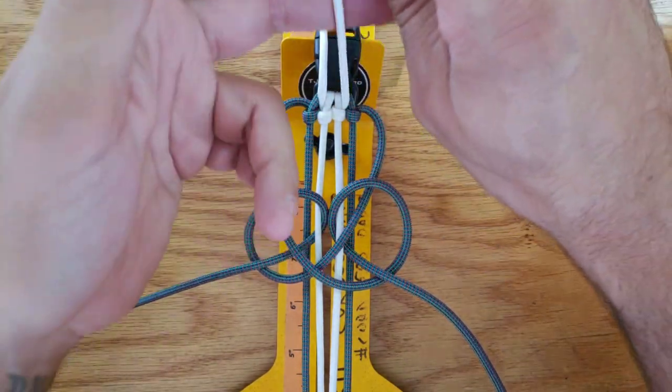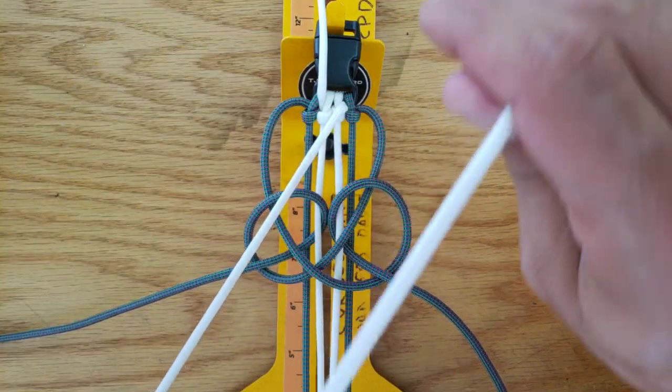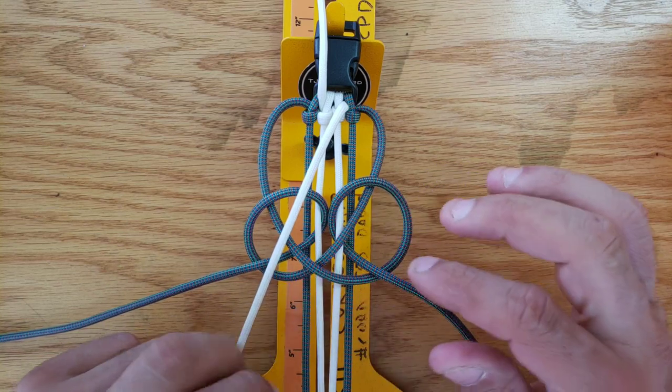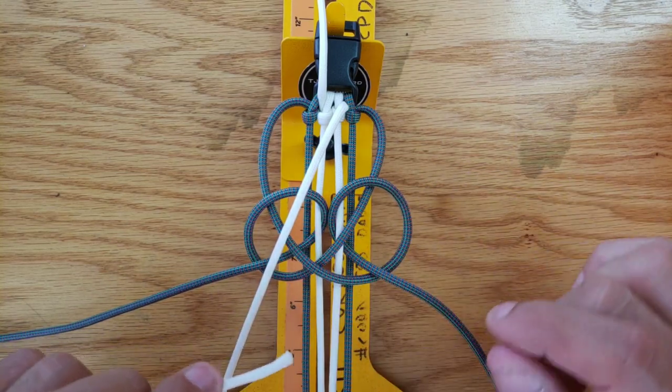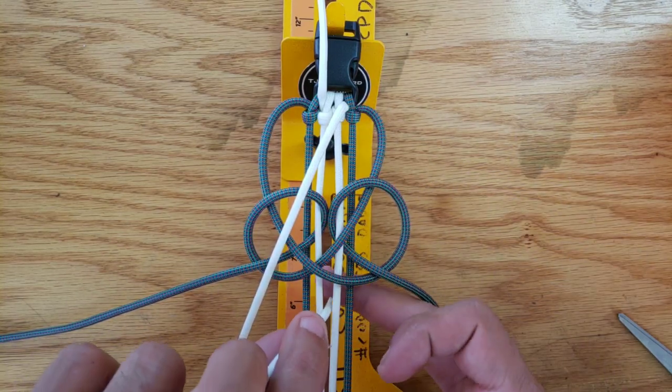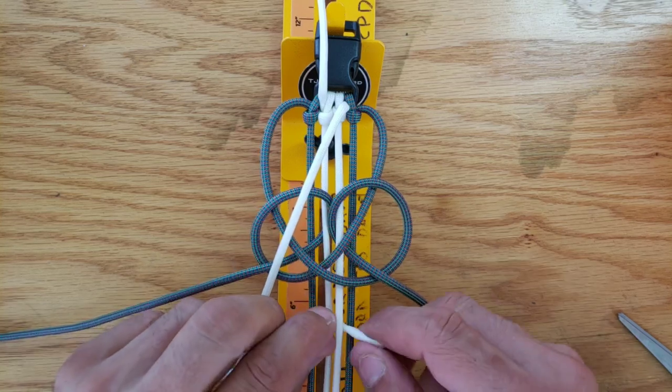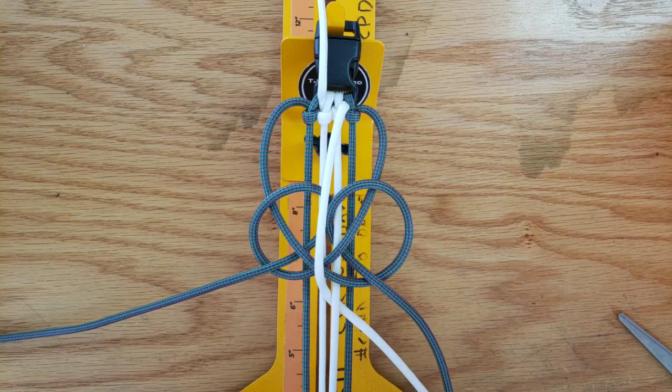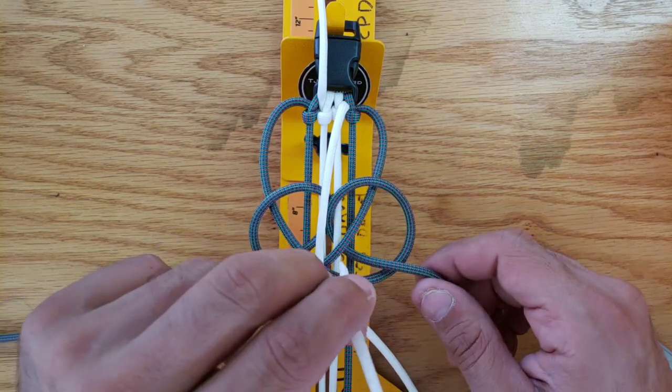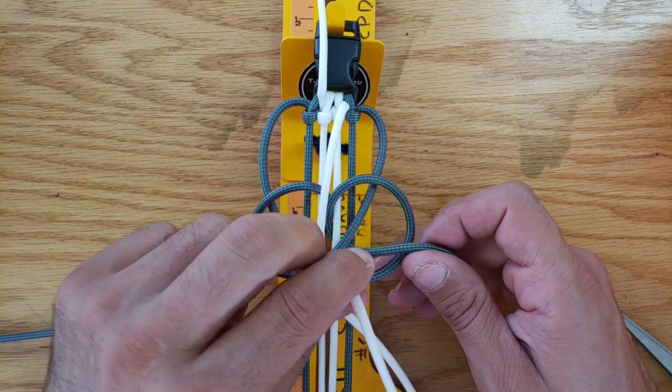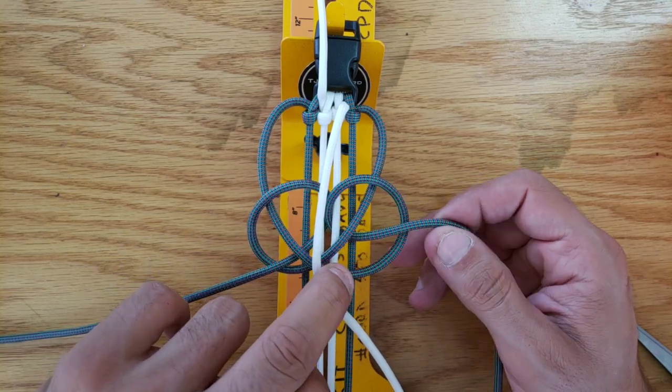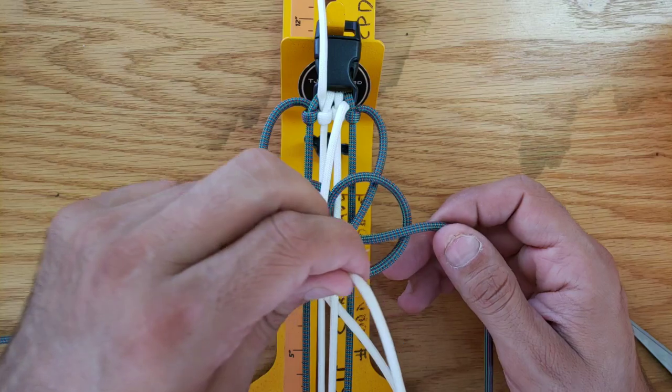Next, take your center cord—I'm starting with my right—and bring that down below the pattern you just made. Go down between cords two and three, up again through between cords three and four, and then right back down over the pretzel that was made, coming out making like a reverse J.